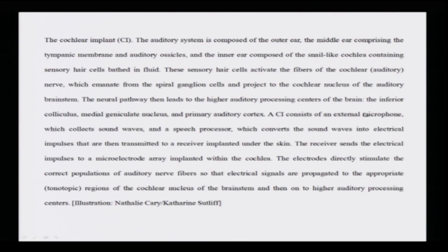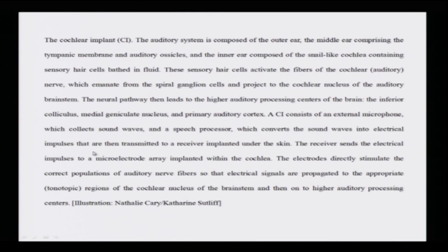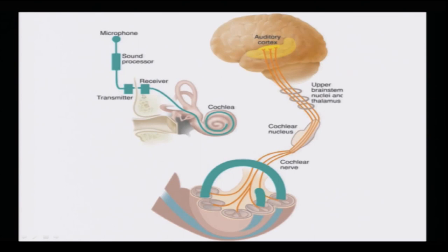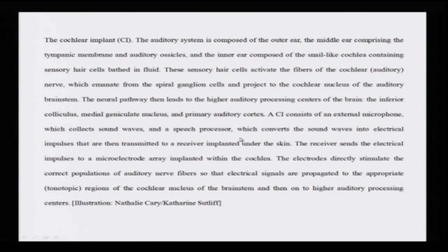A cochlear implant (CI) consists of an external microphone which collects the sound waves, and a speech processor which converts the sound waves into electrical impulses. These are then transmitted to a receiver implanted under the skin.